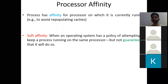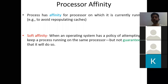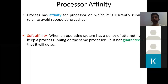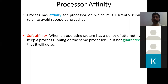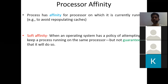There are two types of affinity: soft affinity and hard affinity. In soft affinity, a process requests to execute on a particular processor, but the operating system only attempts to honor this — it's a policy where the OS tries to keep the process on the same processor but gives no guarantee that it will always do so.